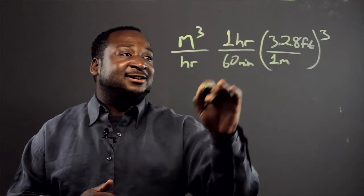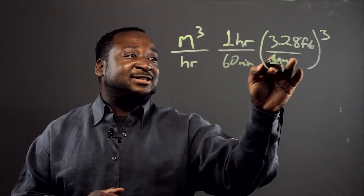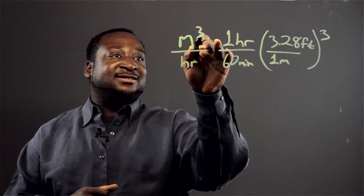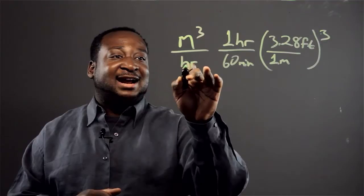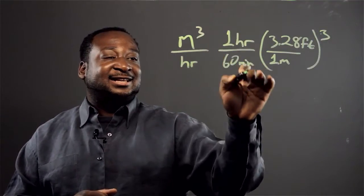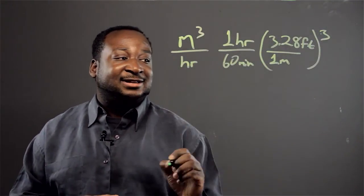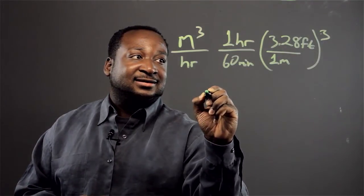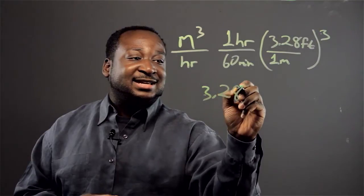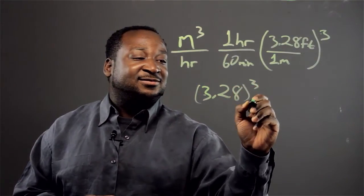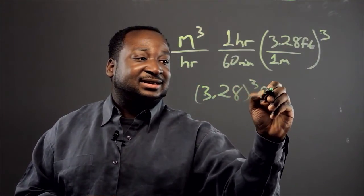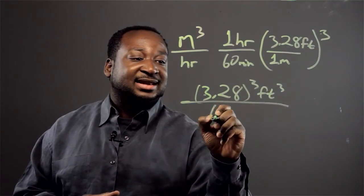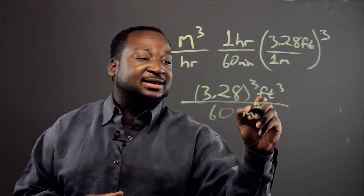So now we have our meters cubed on the bottom, which cancels with our meters cubed on the top, and our hours cancel. So you get 3.28 feet cubed over 60 minutes.